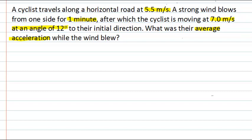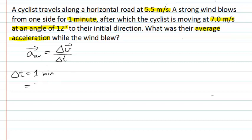Now, what can we say about the relationship between the average acceleration — which I'll write here as a vector quantity — and the information that's given? Our definition of average acceleration is the change in velocity divided by the change in time. The change in time is given as one minute, and we should write that in SI units — that's 60 seconds.